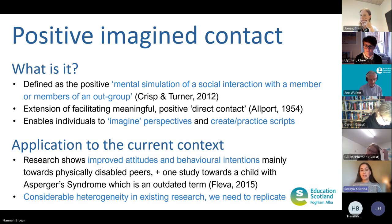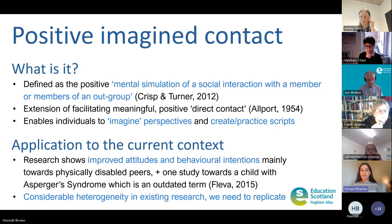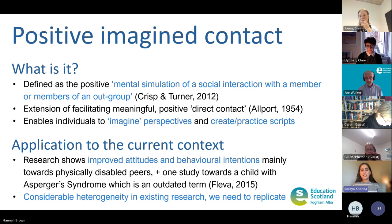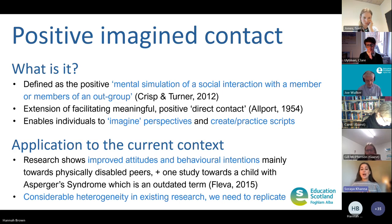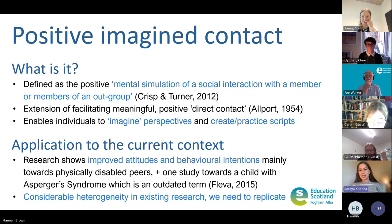There is only one study at the moment looking at imagined contact in improving attitudes towards a child with Asperger's syndrome, but that diagnostic term is outdated, making it difficult to generalise findings to those who identify as autistic. My systematic literature review also highlighted a lot of heterogeneity in previous research, making it hard for practitioners to understand what imagined contact looks like in practice. I found a real need to replicate successful elements of previous studies to understand the evidence-based components of an imagined contact intervention.